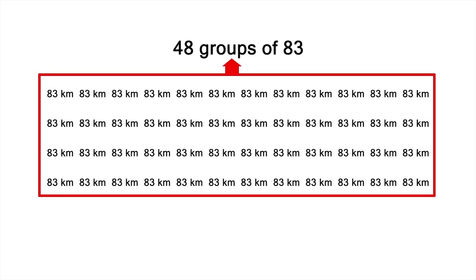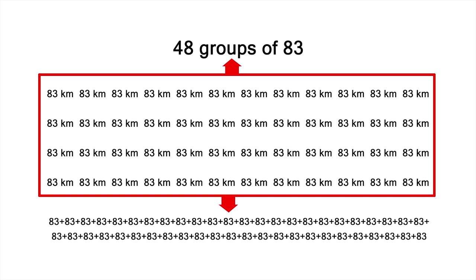Let's use this in our present problem. We have 48 groups of 83, so we could use repeated addition to add them up. But a quicker way is to solve the equivalent multiplication problem: 48 times 83. Let's do it!